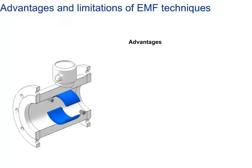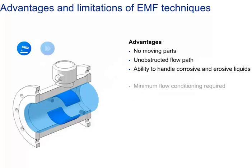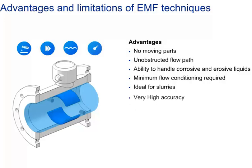Advantages of the electromagnetic flow meter include: no moving parts and no mechanical components like PD meters utilize; an unobstructed flow path, nearly full bore compared to a vortex meter; ability to handle corrosive and erosive liquids by correct selection of liner and electrode material; minimum flow conditioning required — typically three times diameter straight pipe runs upstream; ideal for slurries due to the unobstructed flow path; and high accuracy, with best accuracy of 0.2% of flow rate.